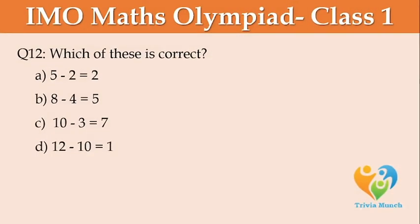Which of these is correct? Option A: 5 minus 2 is equal to 2. Option B: 8 minus 4 is equal to 5. Option C: 10 minus 3 is equal to 7. Option D: 12 minus 10 is equal to 1.